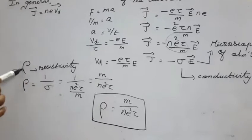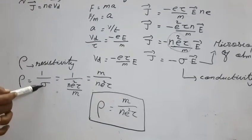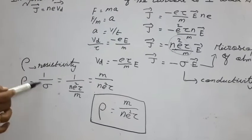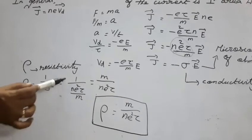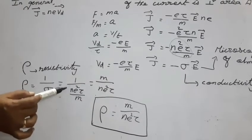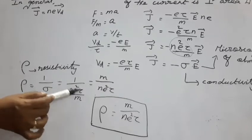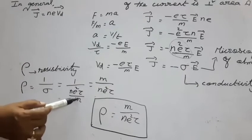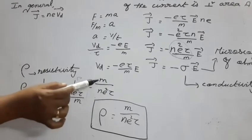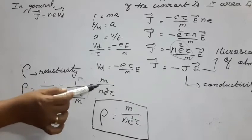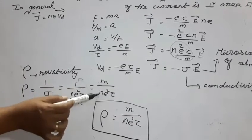Next, ρ is the resistivity. The reciprocal of conductivity is known as resistivity, so 1/σ = ρ. Since σ = ne²τ/m, we get ρ = m/(ne²τ).